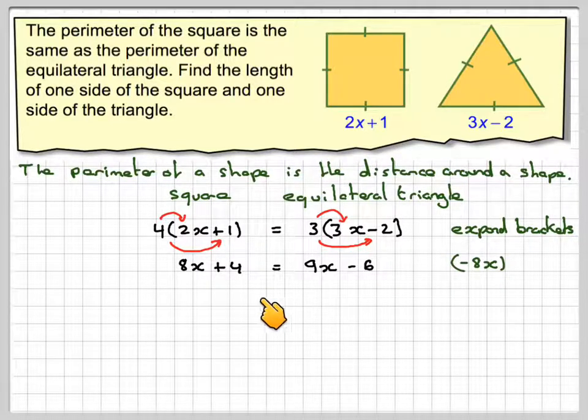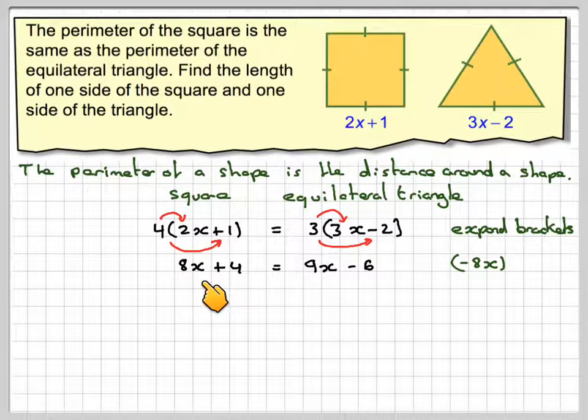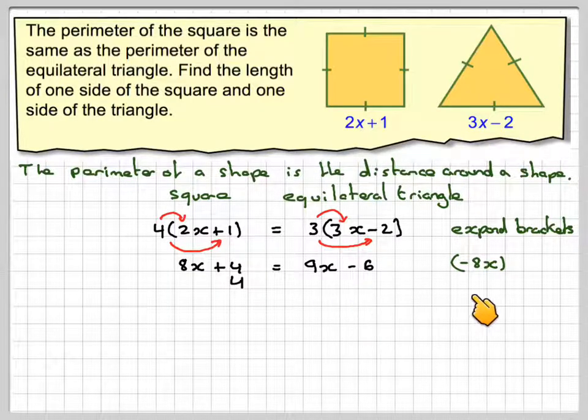Then if we look at the 8x and the 9x, obviously that's smaller, so we take 8x from both sides. So we're going to get the 4 on this side, and then 9x minus 8x gives me x. So we get x minus 6.